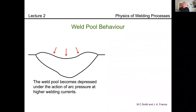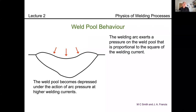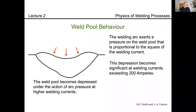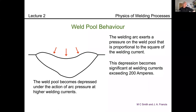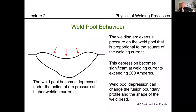Another thing that happens in the weld pool is arc pressure — the electromagnetic arc pressure at higher welding currents actually pushes the surface of the weld pool down. The pressure is proportional to the square of the welding current, so if you've got a welding current in excess of 200 amps, you can end up with quite a significant depression. That also affects the shape of the final weld: if you push the surface down in the middle, you affect the heat flow and therefore the shape of the final weld bead.